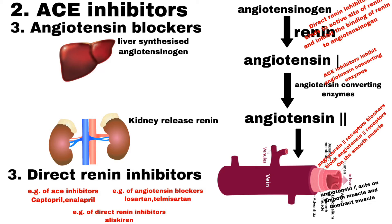Number 3 is Angiotensin Blockers. Angiotensin-2 receptor blockers are medications that block the action of angiotensin-2 by preventing angiotensin-2 from binding to angiotensin receptors located on the muscle surrounding blood vessels. As a result, blood vessels enlarge and blood pressure is reduced. Examples of angiotensin blockers are Losartan, Telmisartan and Valsartan.